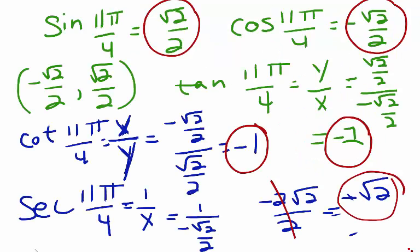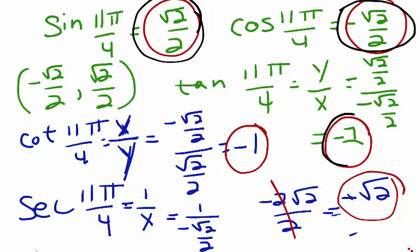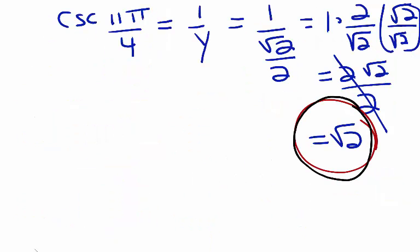So if we backtrack, we see the values of our six trigonometric functions for the angle 11 pi over 4. For sine, we have square root 2 over 2. For cosine, we have negative square root 2 over 2. For tangent, we have negative 1. For cotangent, we also have negative 1. For secant, we have negative square root of 2. And for cosecant, positive square root of 2. I hope you found this video helpful, and we'll see you next time.